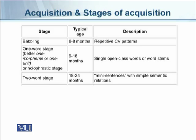The two-word stage starts from 18 to 24 months. The child produces mini-sentences with simple semantic relations — for example, combining a noun and a verb, forming a basic subject and predicate, though both are very simple.